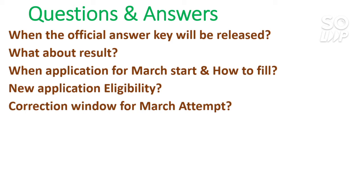I will make a video on how to do the correction window process — I already made one for the February attempt and will make one again for March, so stay with this channel. For a refund: just untick the attempt option for which you want the refund. You will not get the admit card for that attempt and your refund will be processed. If you don't untick the option and you have already received the admit card, a refund will not be possible.